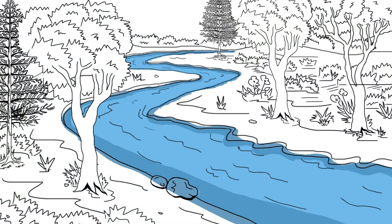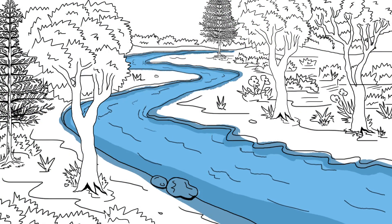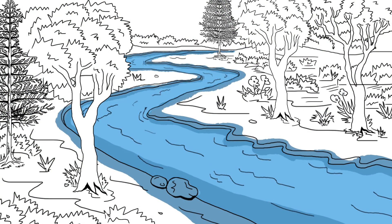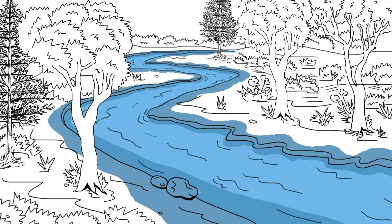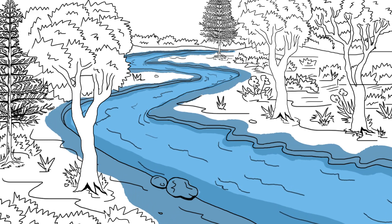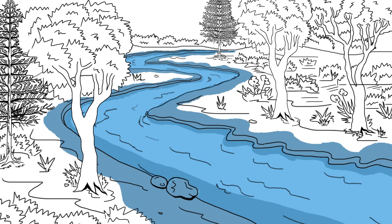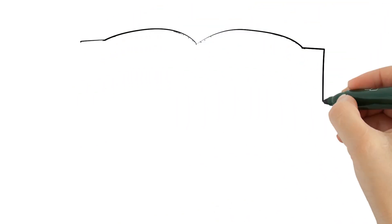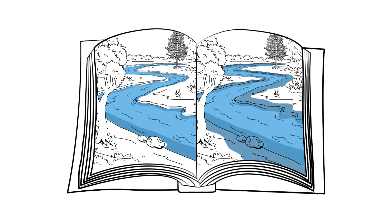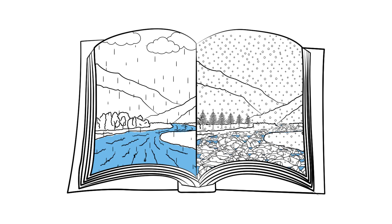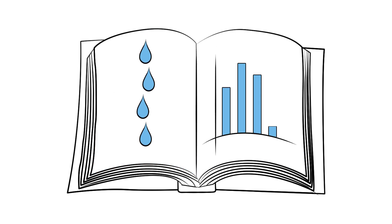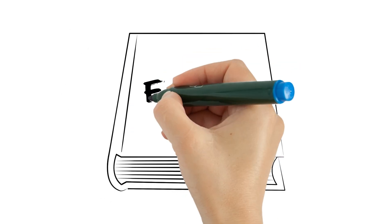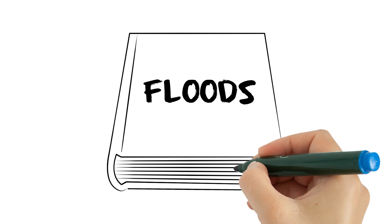We can map small floods and large floods, but to make a map for a specific sized flood we need to choose a specific river flow to model. How do we know what river flows to model and what floods to map? First, we investigate historical floods and analyze precipitation and flow data to understand what kinds of floods we might see in the future.